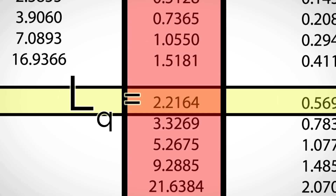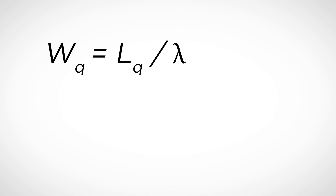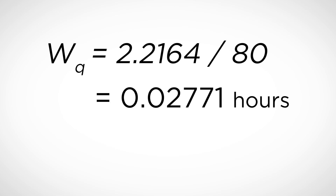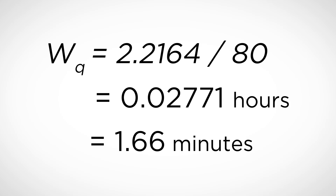Then using Little's Law, we can determine the average amount of time that a customer has to wait. The average wait time equals the average number of customers waiting divided by the arrival rate. In this case, that corresponds to 2.2164 divided by 80, which translates into 0.02771 hours, or 1.66 minutes.